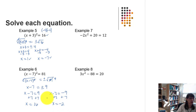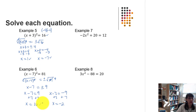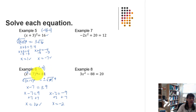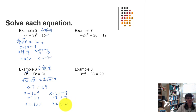Let's check these answers. Using 16: 16 minus 7 is 9, and 9 squared is 81, so 16 works. Using negative 2: negative 2 minus 7 gives negative 9, and the quantity of negative 9 squared means negative 9 times negative 9. Two negatives make positive 81, so both x values work.